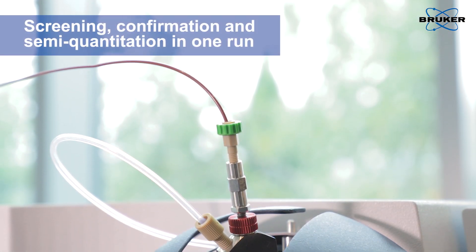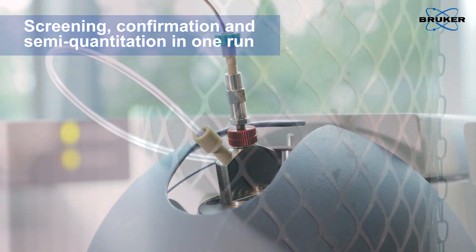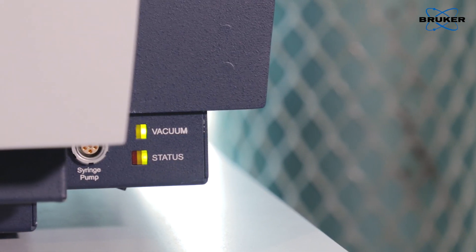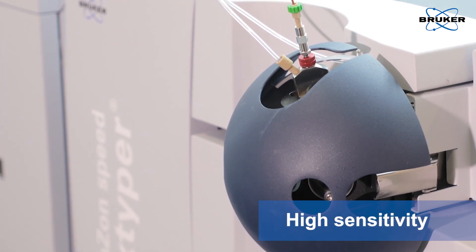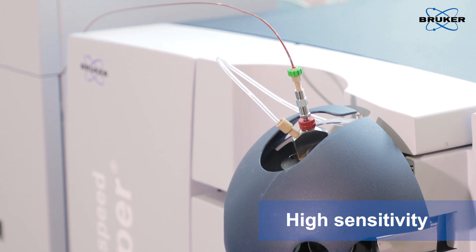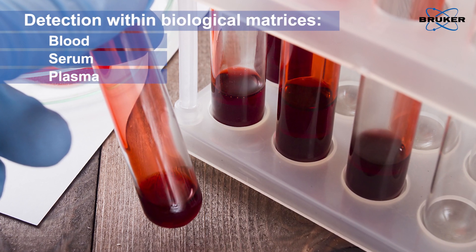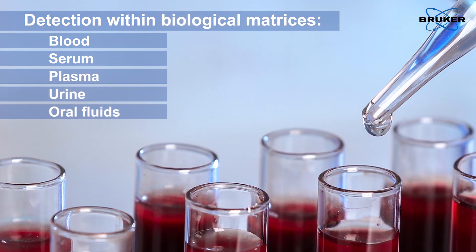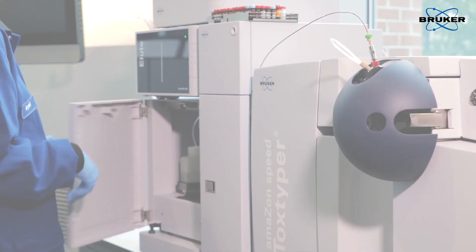The Toxtyper can perform screening, confirmation, and semi-quantitation in one run at parts per billion sensitivity levels beyond what conventional GC-MS screening solutions can offer. This means it is possible to detect target substances and their metabolites in a wide range of biological matrices at concentrations down to low nanograms per milliliter.